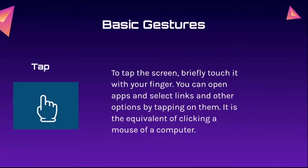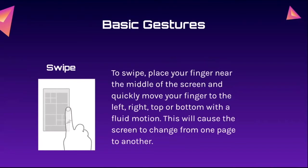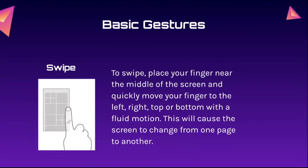To tap the screen, you briefly touch it with your finger. You can open apps and select links and other options by tapping on them, and it's the equivalent of clicking a mouse on a computer. Swiping is placing your finger near the middle of the screen and then quickly moving your finger to the left, right, top, or bottom with a fluid motion, and this will cause the screen to change from one page to another.